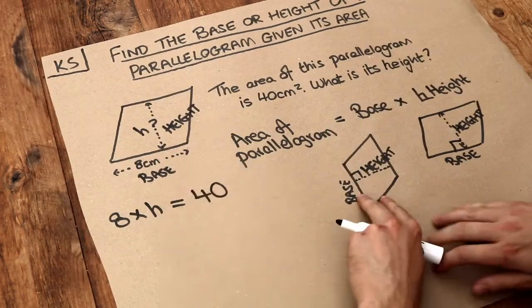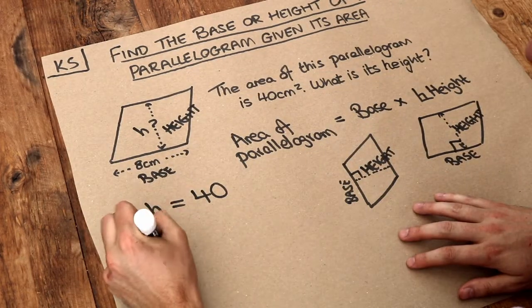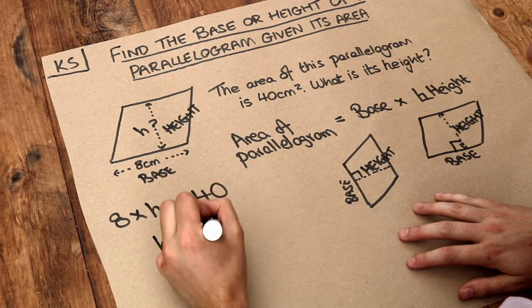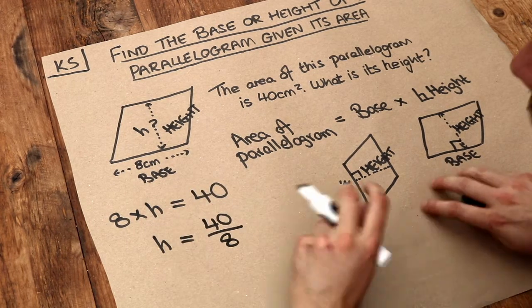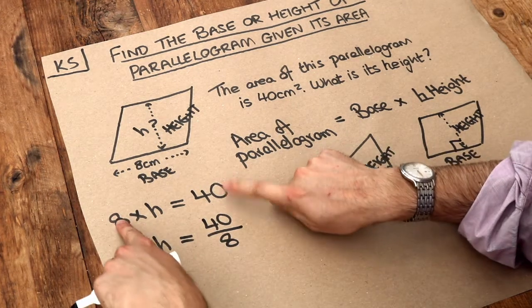And then we ask ourselves, well 8 times what is 40? Well we could do a division to work that out. It's just going to be 40 divided by 8, because I've divided both sides of the equation by 8.